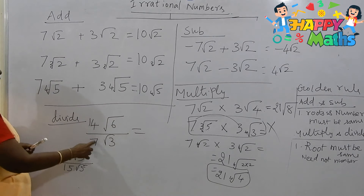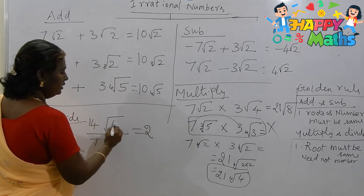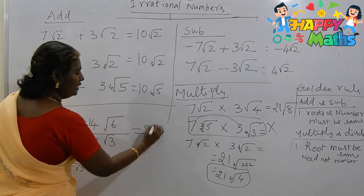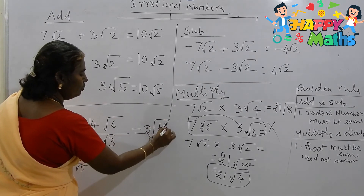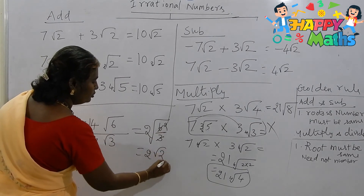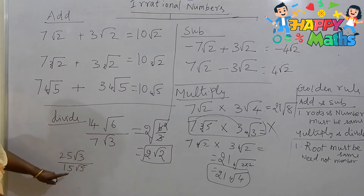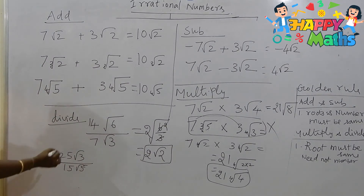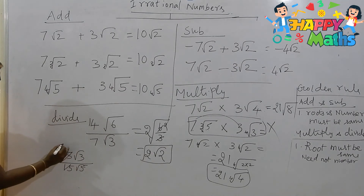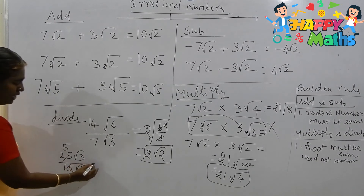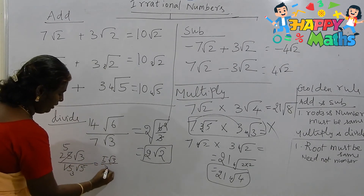For division: 14 root 6 divided by 7 root 3 — as usual, divide 14 by 7 to get 2. Then take root 6 and root 3 into the same square root and divide: root of 6 divided by 3 is root 2. So the answer is 2 root 2. Now for 25 root 3 divided by 15 root 5: you can divide the numbers — 25 by 15 gives 5 by 3 — so the answer is 5 root 3 divided by 3 root 5, which simplifies to 5 root 3 over 3 root 5.